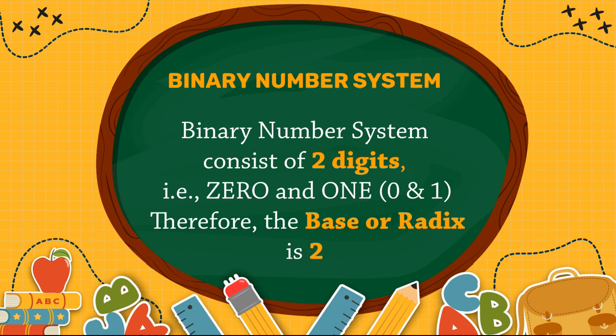The second one is binary number system. The binary number system consists of only 2 digits, that is 0 and 1. Since this system uses 2 digits, it has the base 2, or radix 2.